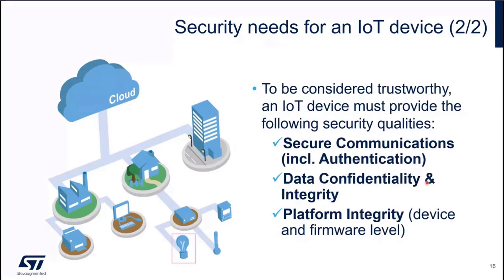To achieve this goal and be considered trustworthy, an IoT device must provide the following security qualities: secure communication, which will also include authentication — we will see that in detail when looking at TLS. We must provide data confidentiality and integrity, which will be done through cryptography. And finally, we must ensure platform integrity at both device and firmware levels. The combination of STM32 and STSAFE-A will allow us to do so.